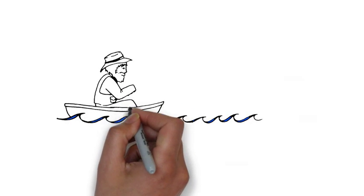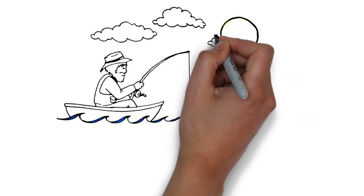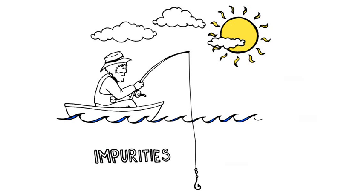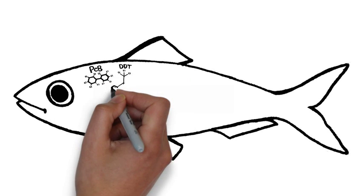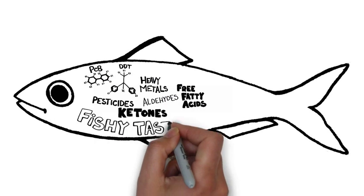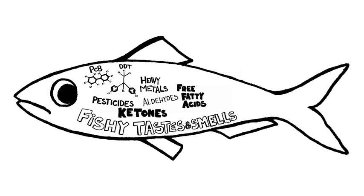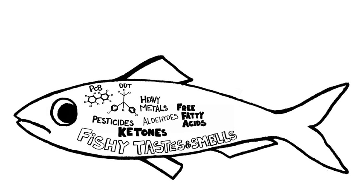However, like all things that come from the ocean, this oil also contains impurities that we want to remove. For example, it contains industrial pollutants. It also contains compounds that are a result of fatty acid breakdown. These compounds contribute to a fishy smell and taste.